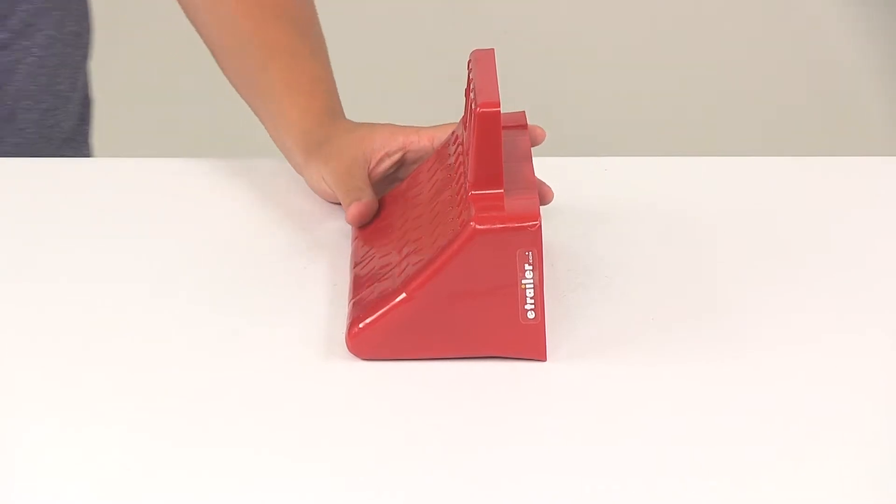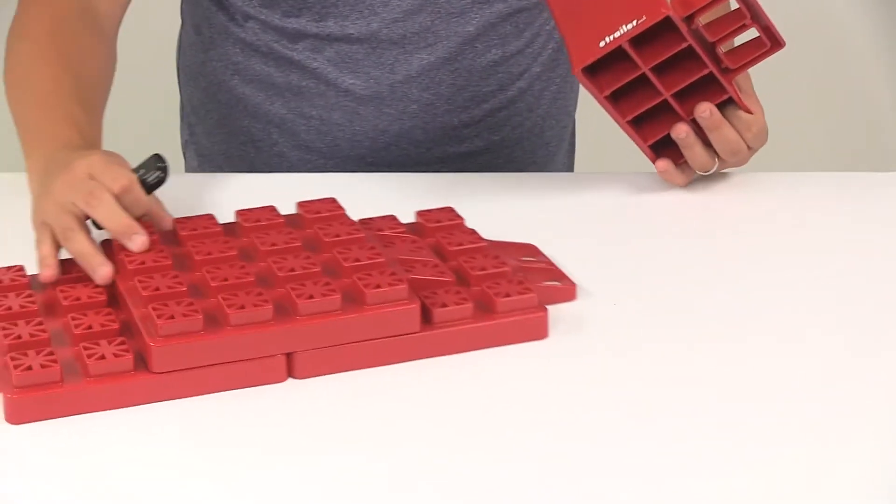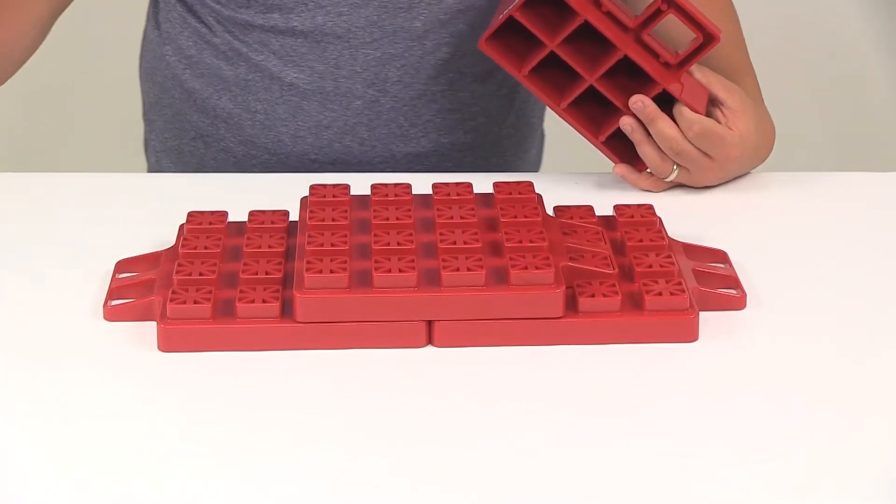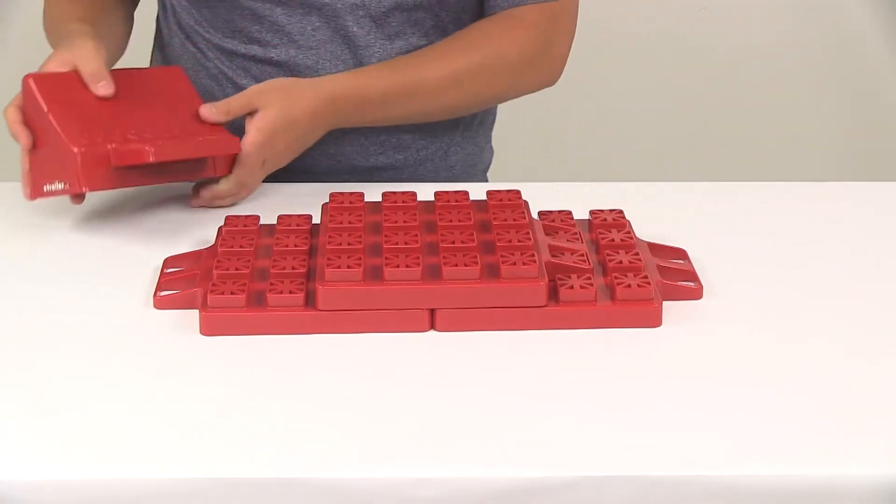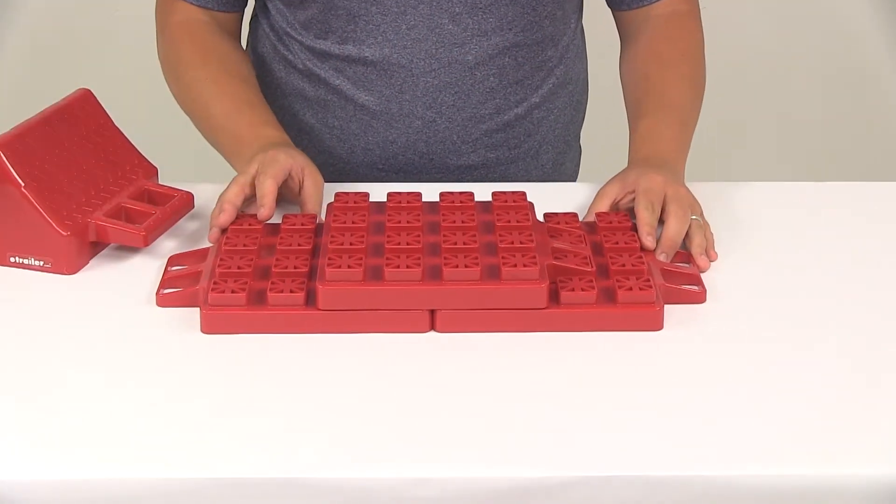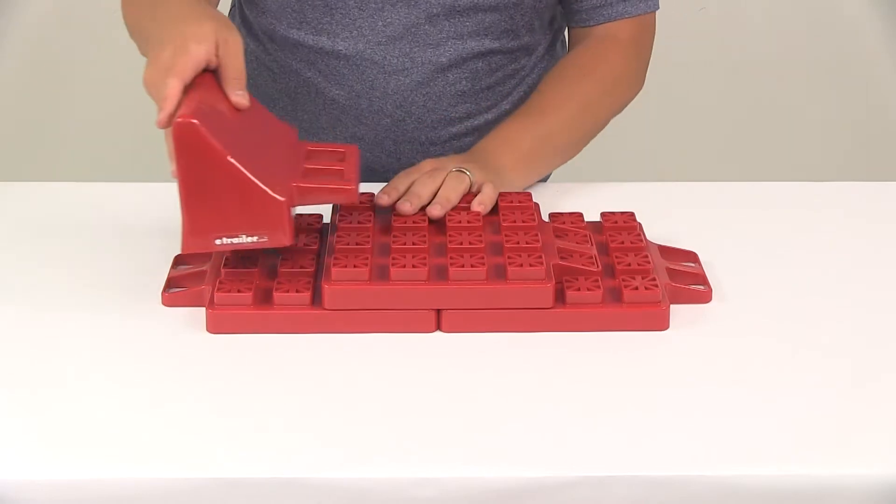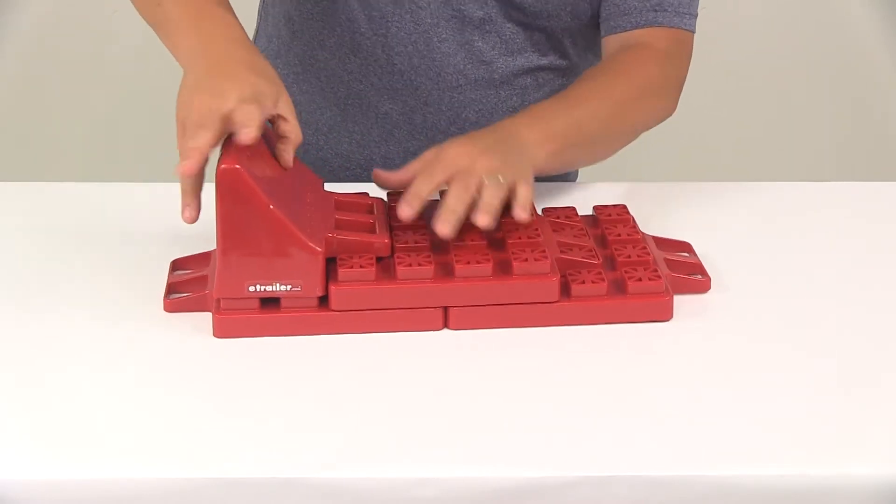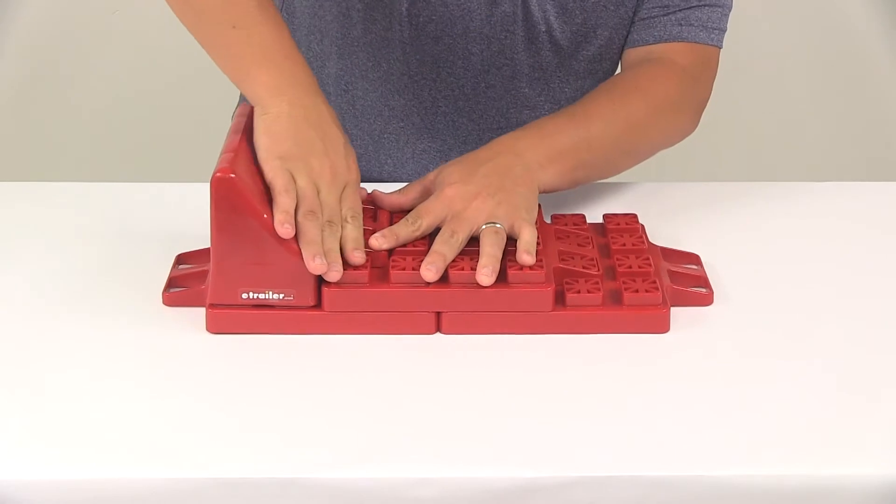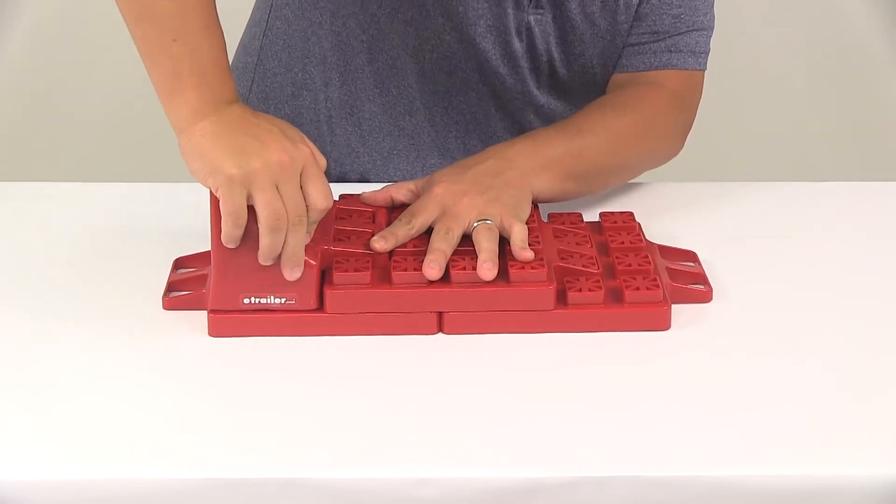So I do have the Valterra stackers that we can see how the unit works. So the way this is designed to work is you would place it directly onto the unit, push it down making sure everything interlocks the way it's supposed to.